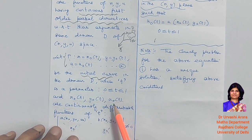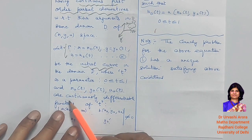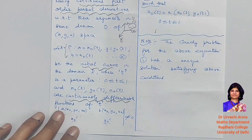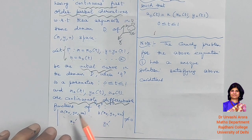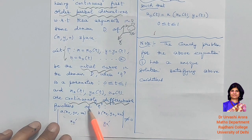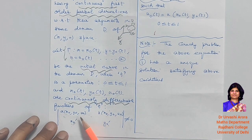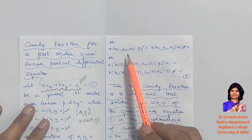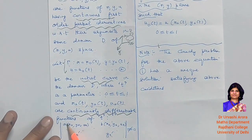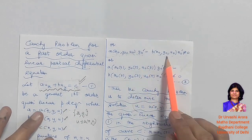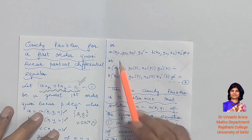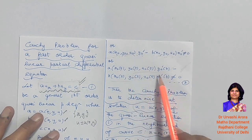We also assume that x₀(t), y₀(t), u₀(t) are continuously differentiable functions of t. These assumptions are made to ensure that the Cauchy problem has a solution. Additionally, we assume that the determinant — with entries a(x₀, y₀, u₀), b(x₀, y₀, u₀) in the first row and x₀'(t), y₀'(t) in the second row — is non-zero. Explicitly, this means a·y₀' − b·x₀' ≠ 0.